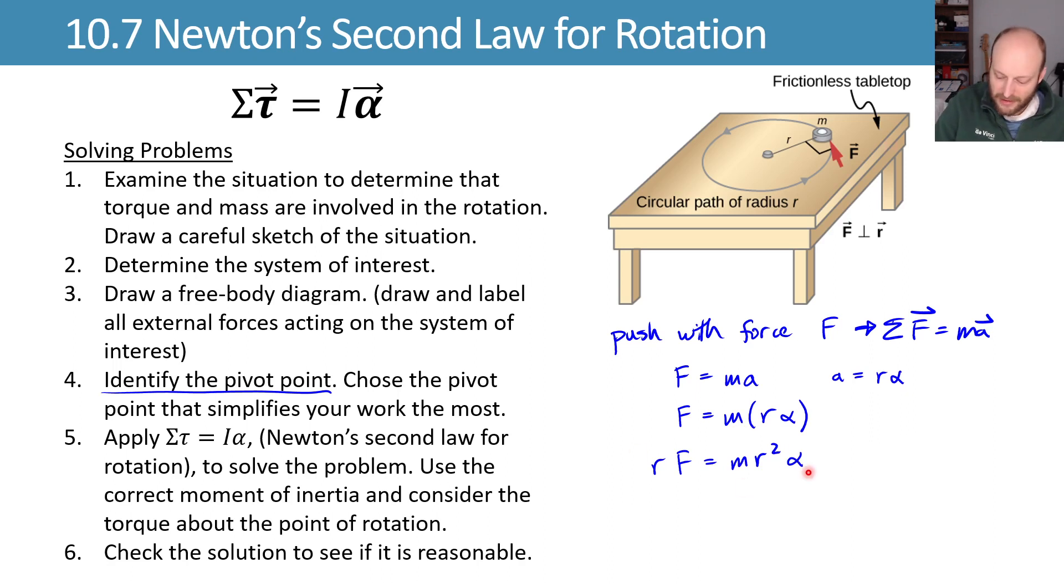And this looks a lot like this over here, where we can say that this RF gives us a torque. This MR squared gives us the moment of inertia of that point object, and then alpha hangs around.